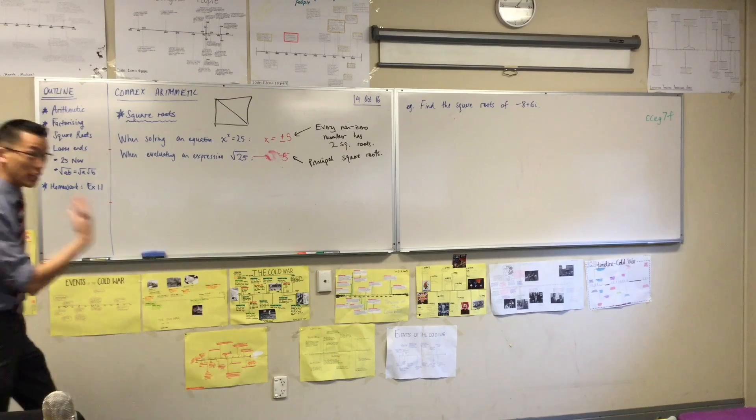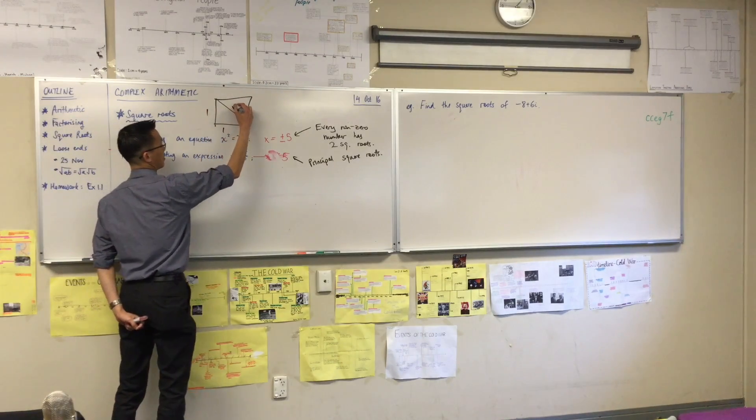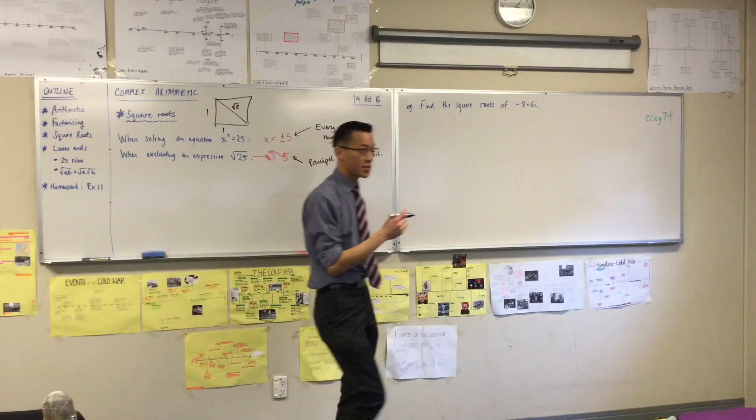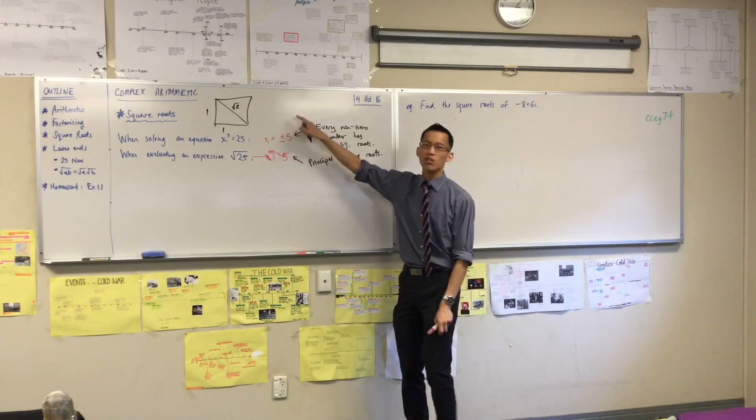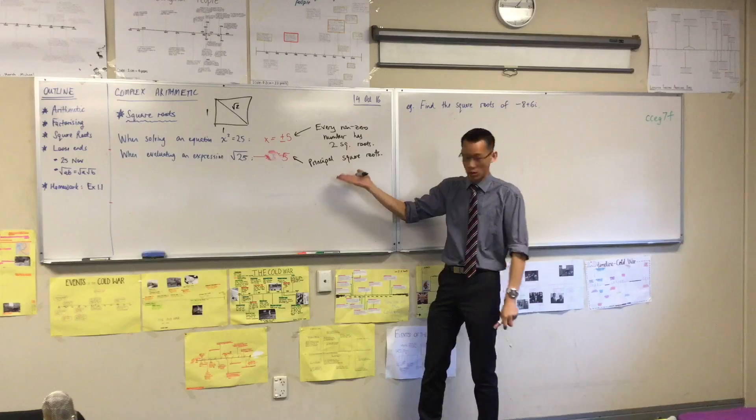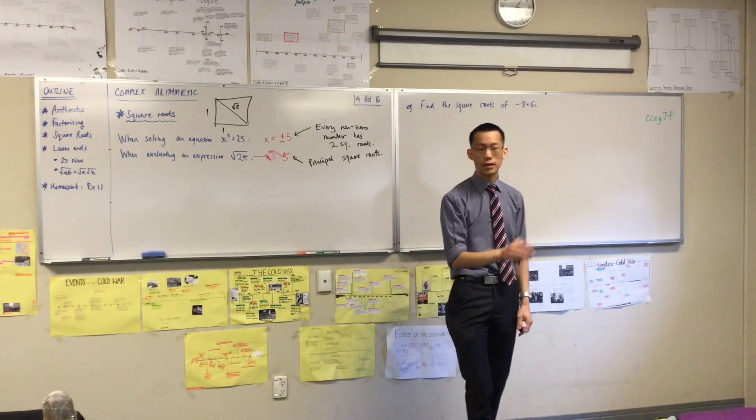Now if you're doing Pythagoras, if you're working out legs, right? Then if there's one thing I know about legs, they're positive, right? They are always positive. So it makes sense if you're like, well, I'll choose one. I'll choose one to be the important one. The positive one makes sense.